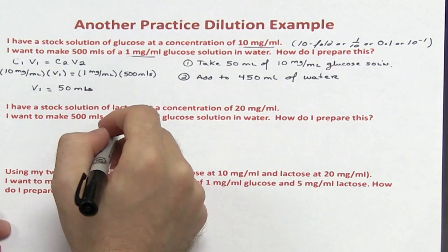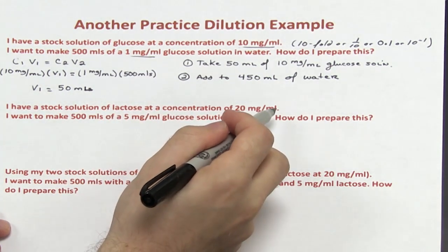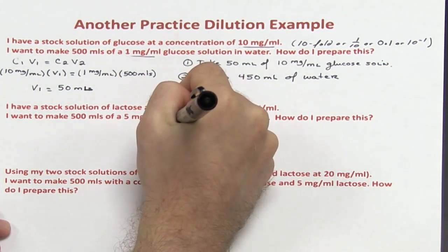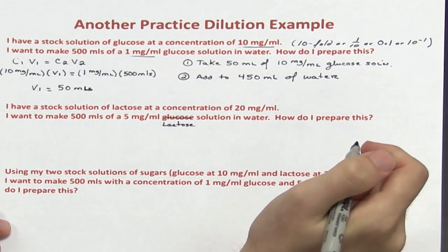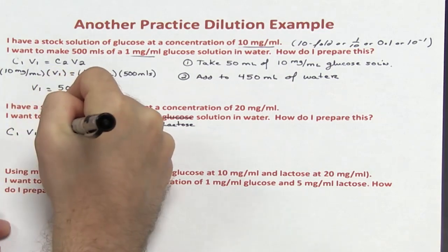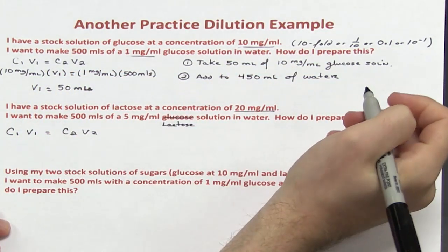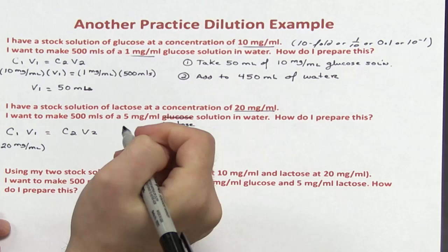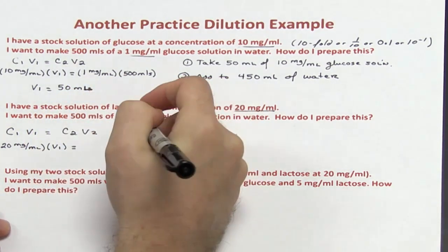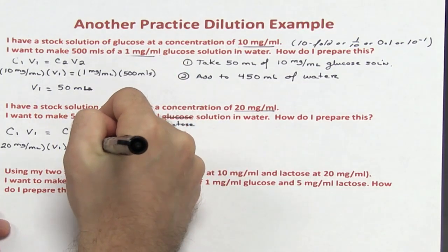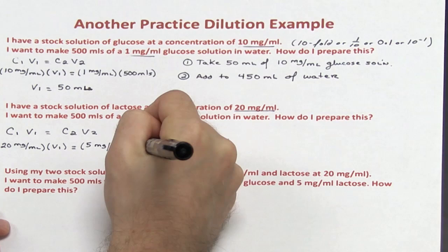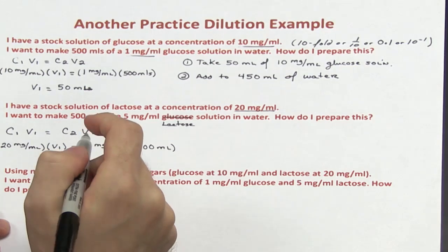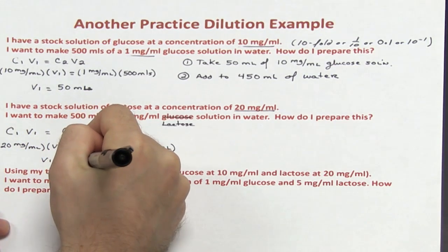Second question: I have a stock solution of lactose at 20 mg per mL, and I want to make 500 mL of a 5 mg per mL lactose solution in water. Using C1V1 = C2V2: initial concentration is 20 mg per mL, V1 is unknown, final concentration is 5 mg per mL, and volume is 500 mL. Solving for V1, I get V1 equals 125 mL.